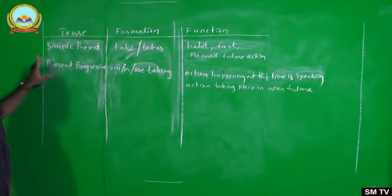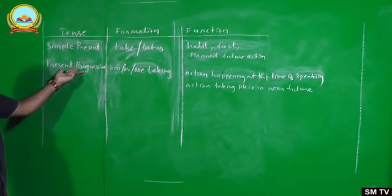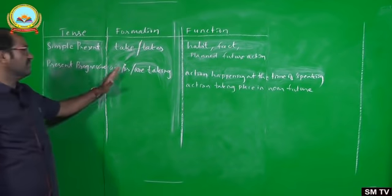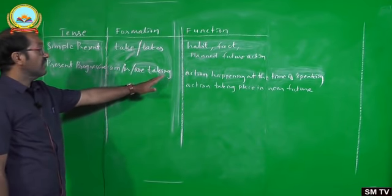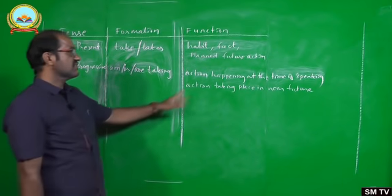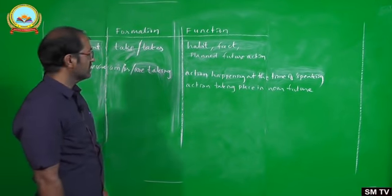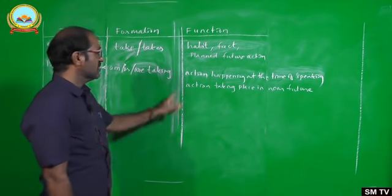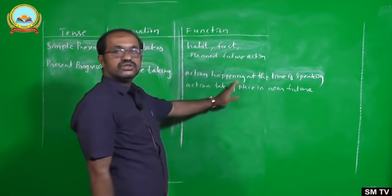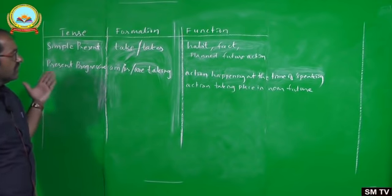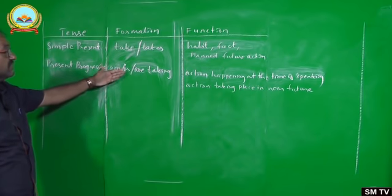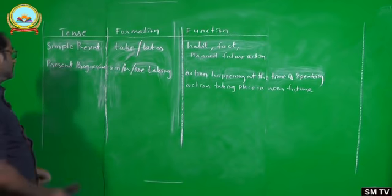So this is something about present continuous tense. Present is the time, progressive is the aspect. It is formed using 'am', 'is', or 'are' plus the main verb with '-ing' added. The two main functions are: action happening at the time of speaking, and action taking place in near future. You must also guard against using this tense with certain static verbs.